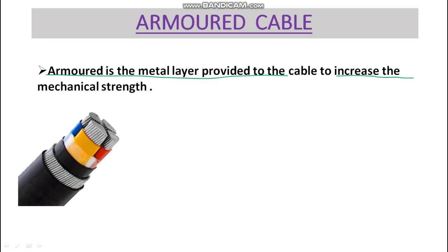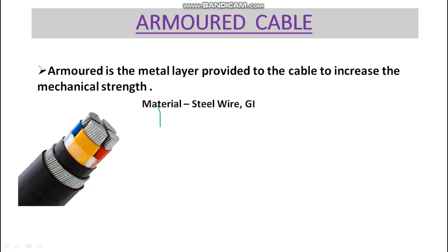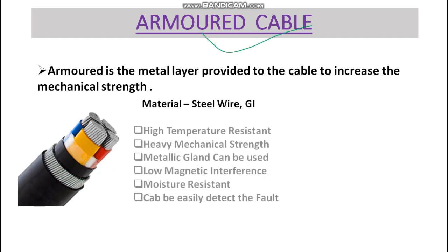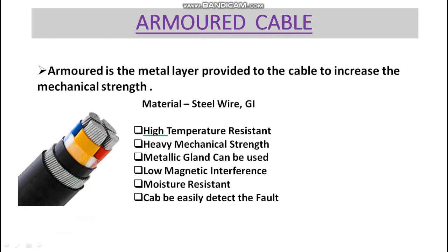As you can see here, this is the steel armoring which provides mechanical strength. The armoring material can be steel wire or GI wire. Now, since armored cable is more expensive, let's look at its advantages to understand why we use it.